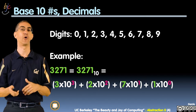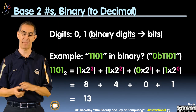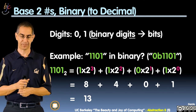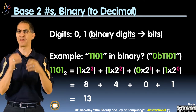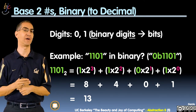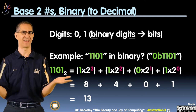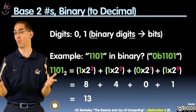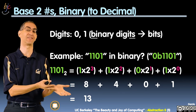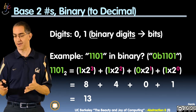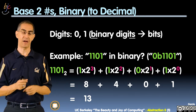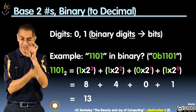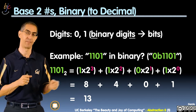Now watch what happens when we think of another base. In binary, it's exactly the same idea. I'm going to give you a number: 1101 in binary. If it were base ten, that would be eleven hundred and one, but interpreted in binary it's different. The way we usually indicate binary is by saying 0B in front, or a subscript two in the bottom right.